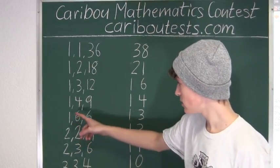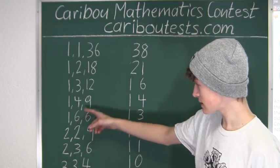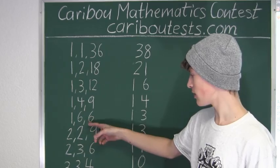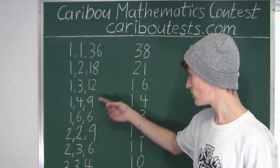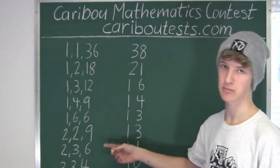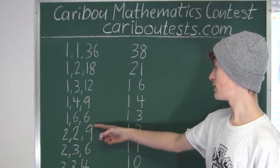Looking here, we can see for the 1, 6, and 6, we have 2 of the children, the 2 oldest children, are the same age. So we know that it must be 2, 2, and 9. So the ages must be 2, 2, and 9.